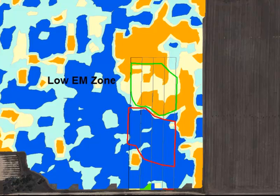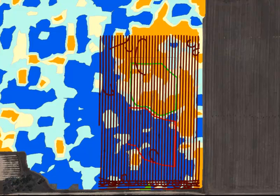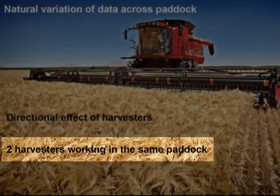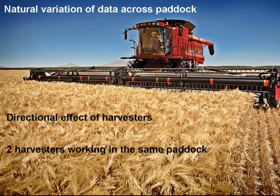Once we've identified the trial outline and the EM zones, we then need to bring in the yield data. Before we start any trial data extraction, we need to understand what is the natural variation of data across the paddock, be it either from directional effects of harvesters, or there being two headers or harvesters working in the same paddock. For this we're going to select three adjacent rows of harvest data immediately outside the trial.